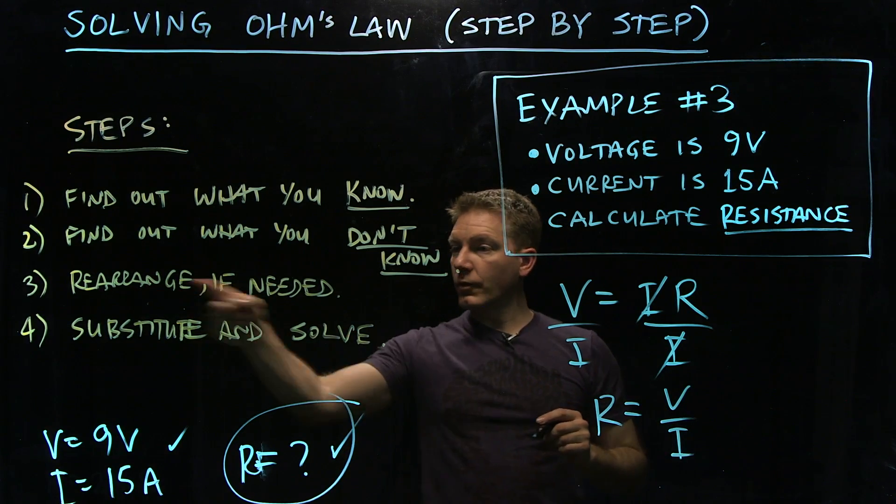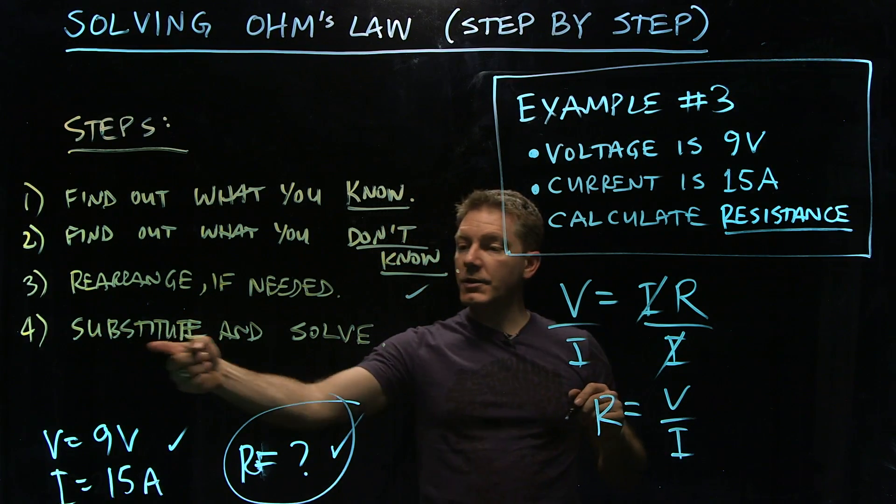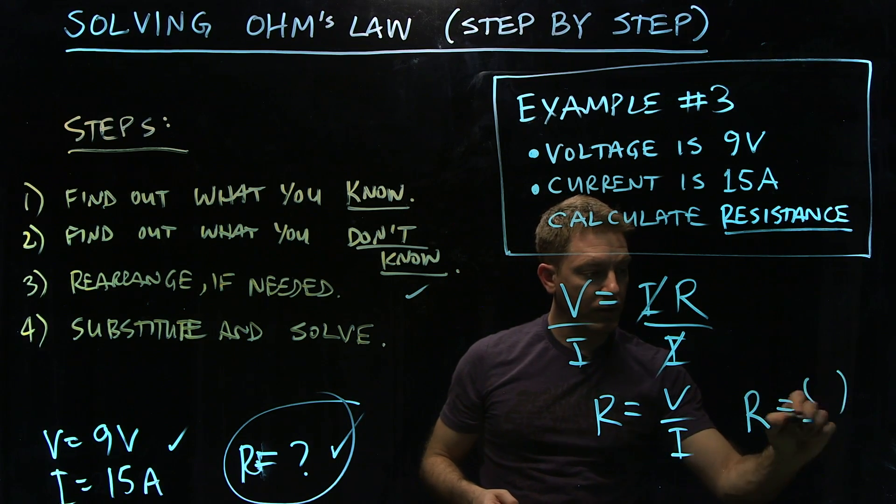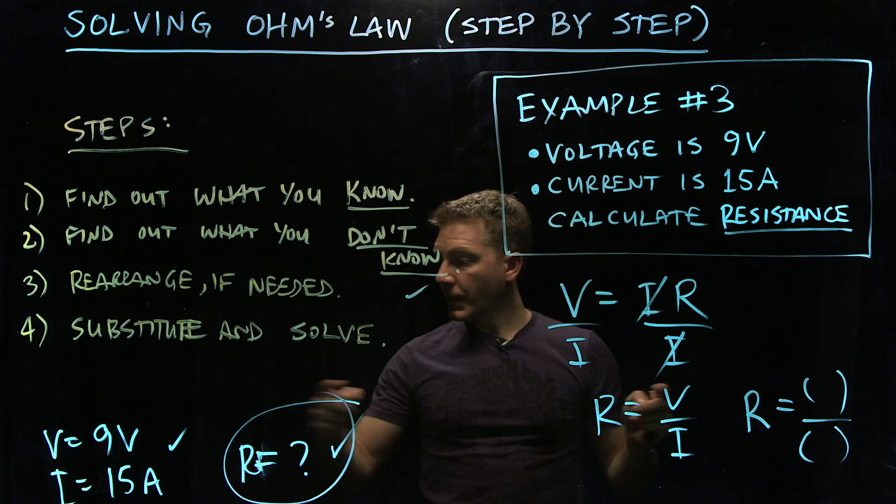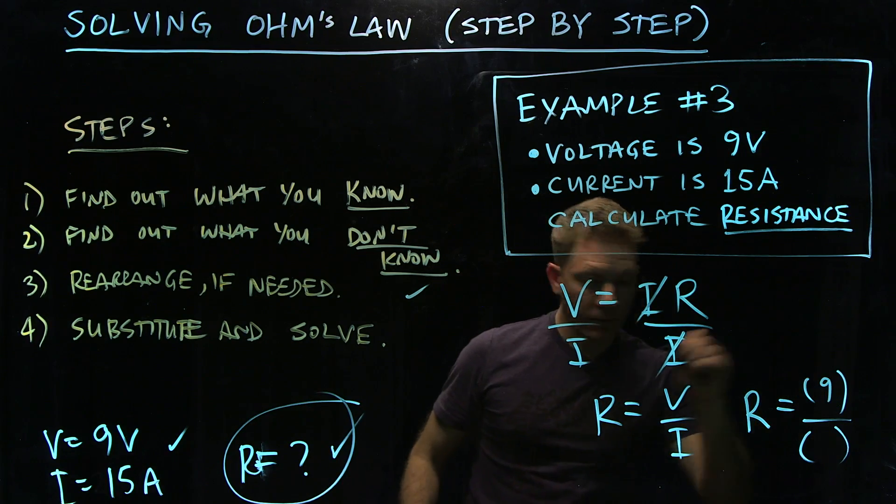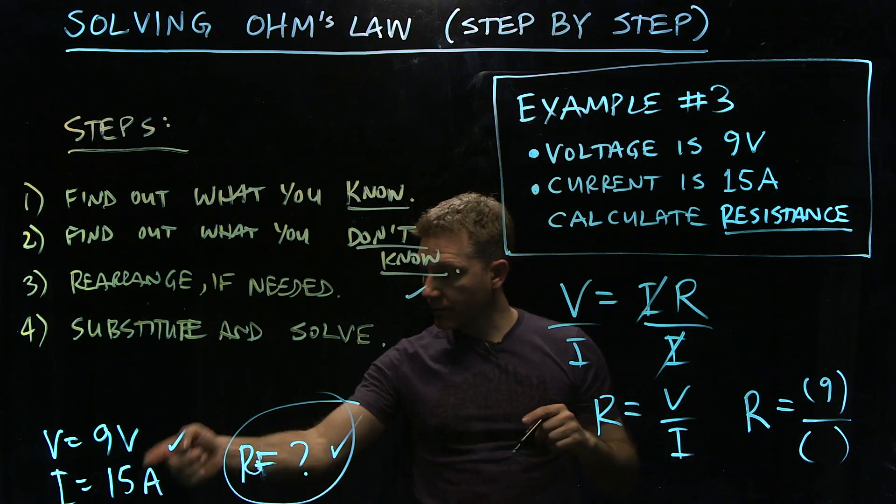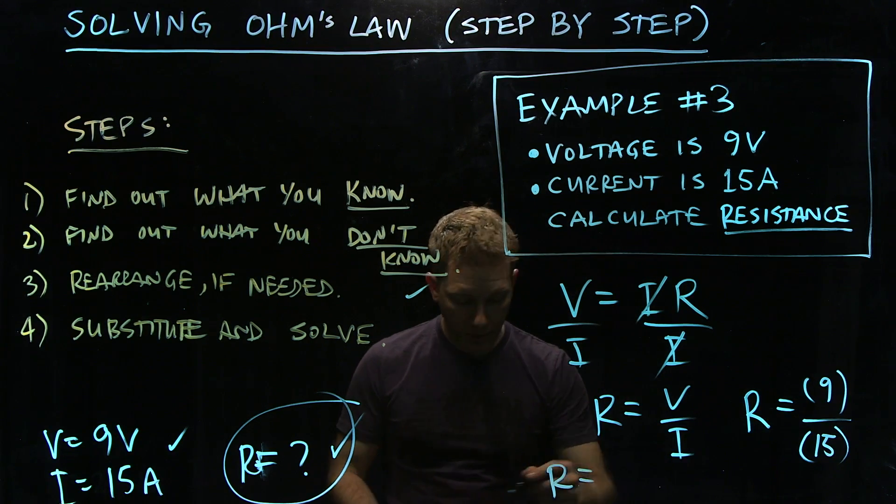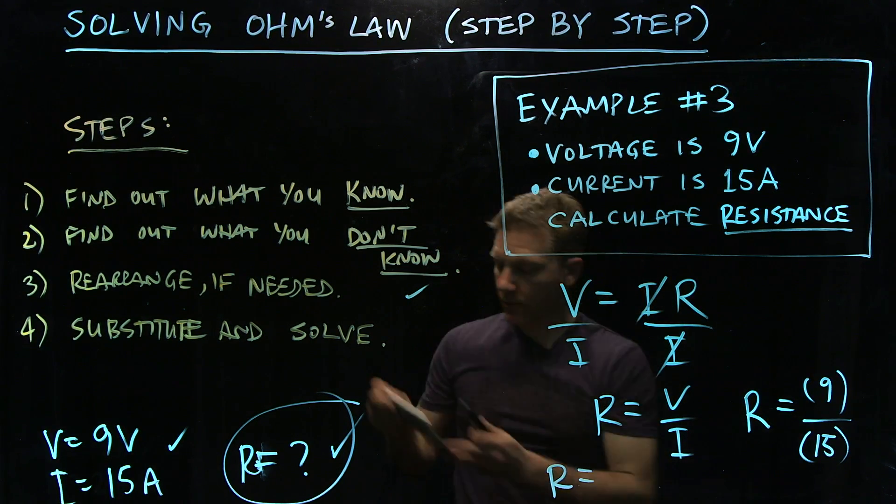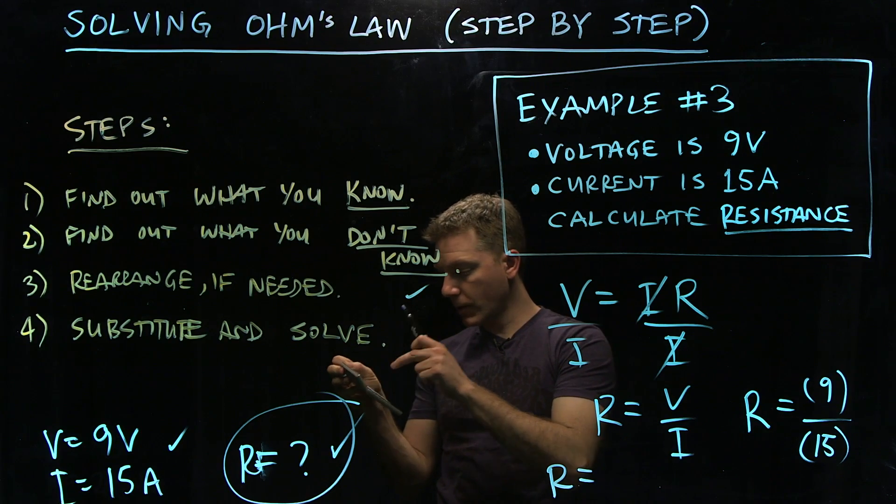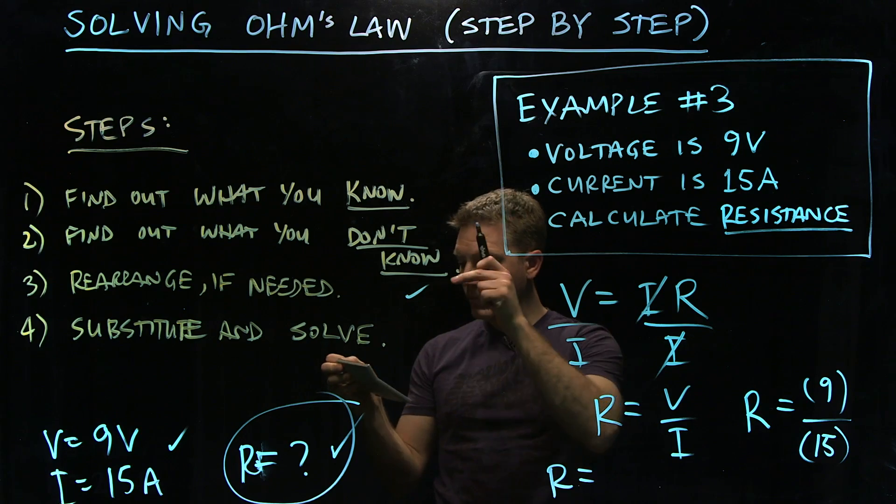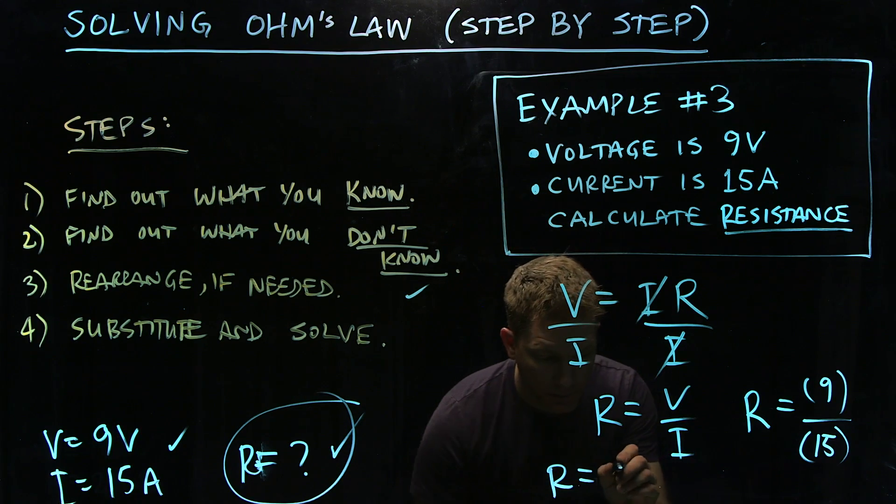Okay, rearrange if needed, we did that. Substitute and solve. So now we say R is equal to V over I. V is 9 volts and I is 15 amps, so R is equal to 9 over 15. R is equal to 9 divided by 15, 0.6.